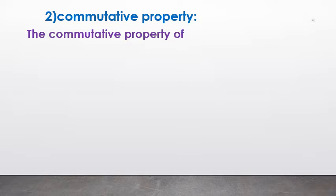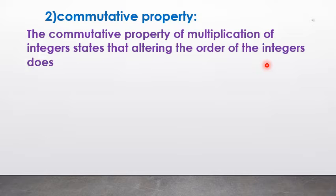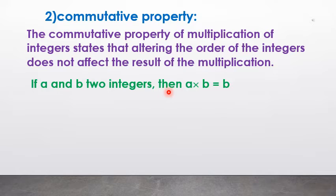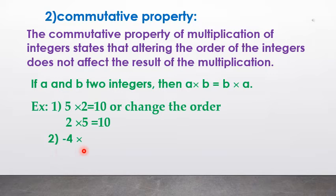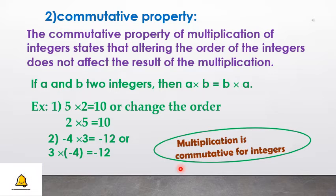Commutative property: the commutative property of multiplication of integers states that altering the order of the integers does not affect the result of the multiplication. If a and b are two integers, then a × b = b × a. For example, 5 × 2 = 10 and 2 × 5 = 10. Another example, 4 × (−3) = −12 and (−3) × 4 = −12. Therefore, multiplication is commutative for integers.